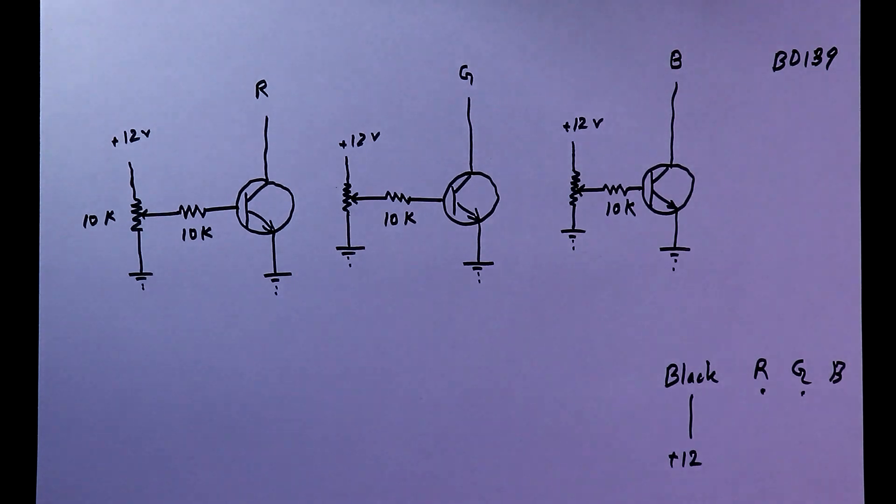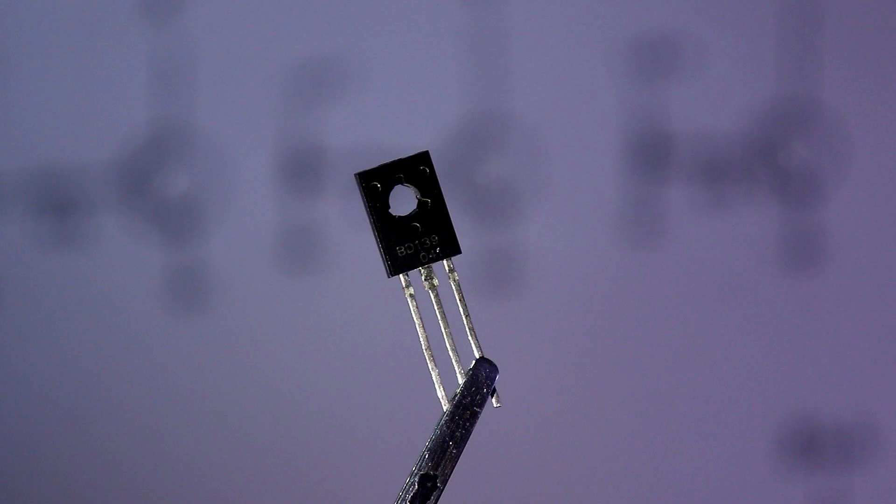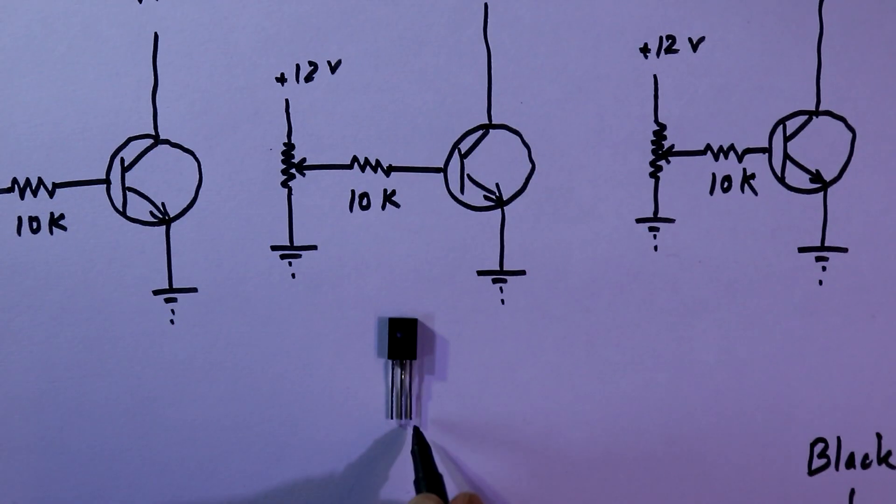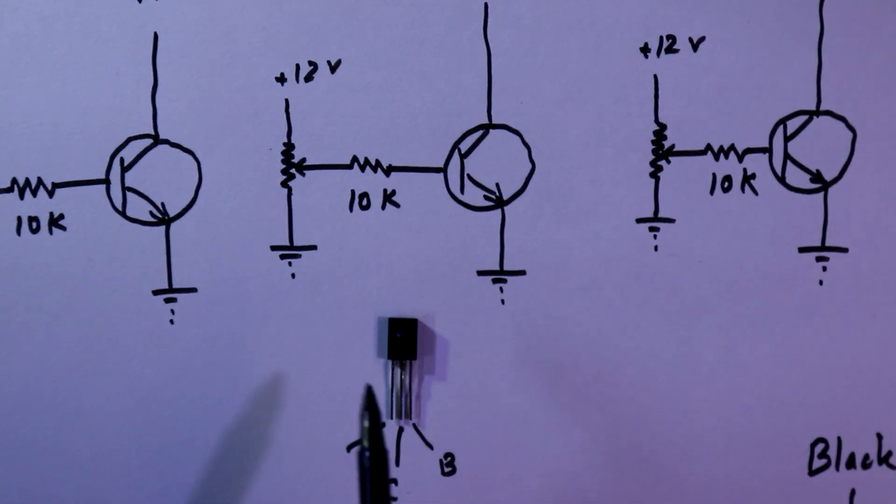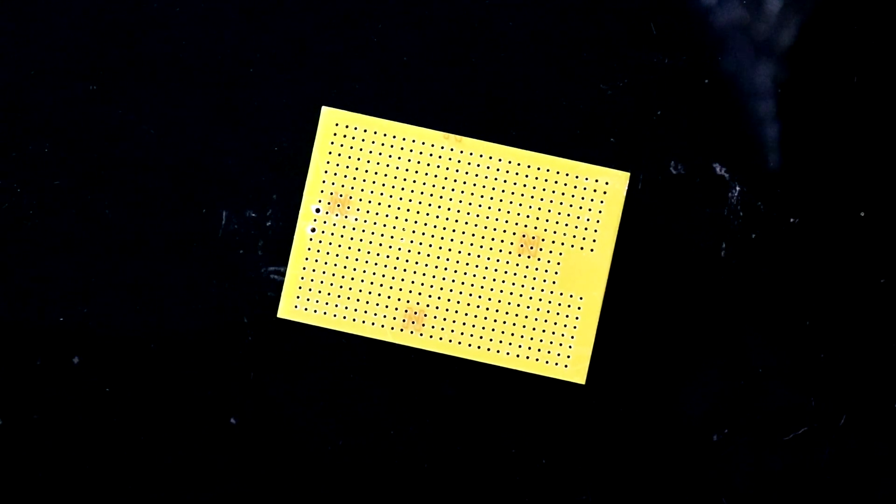This is the BD139. This pin is base, the middle pin is collector, and the first pin from the left side is emitter. I'll solder it on this.